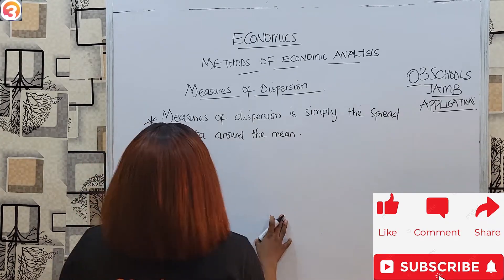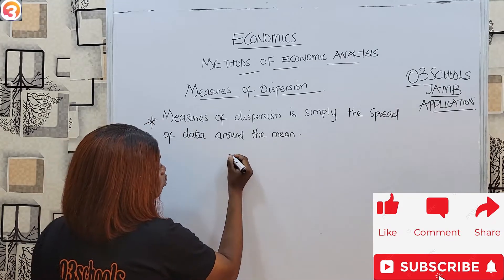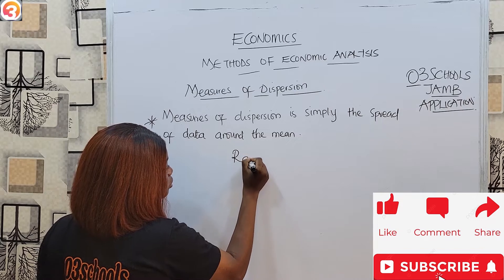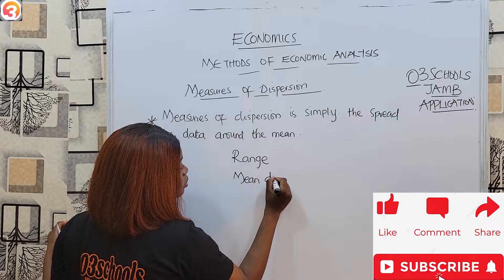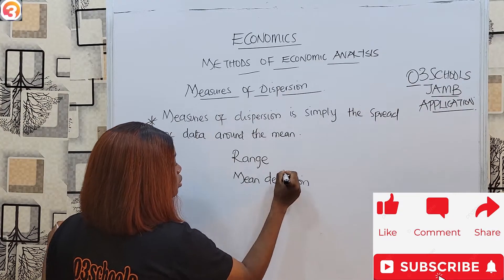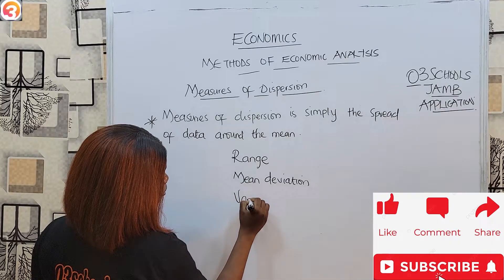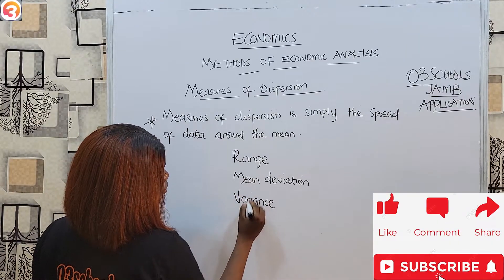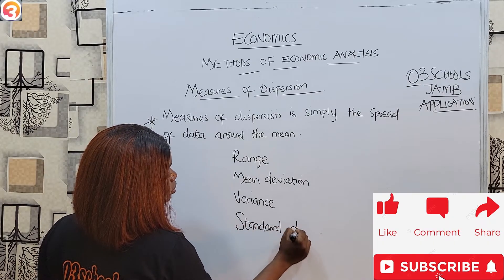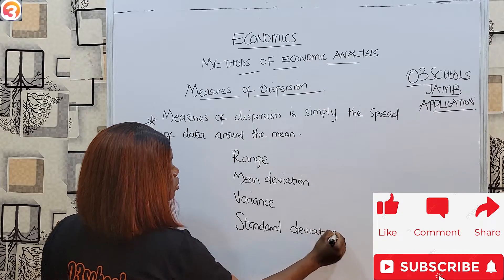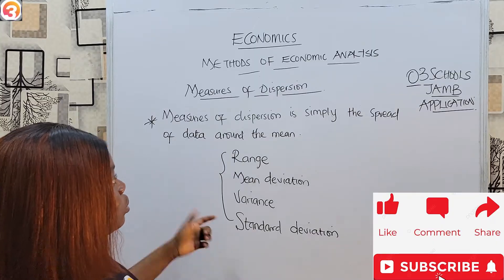Now the measures of central tendency were three — we have the mean, median, and mode — but in this case the measures of dispersion are four: we have range, we have mean deviation, we have variance, and we have standard deviation. These are the measures of dispersion.